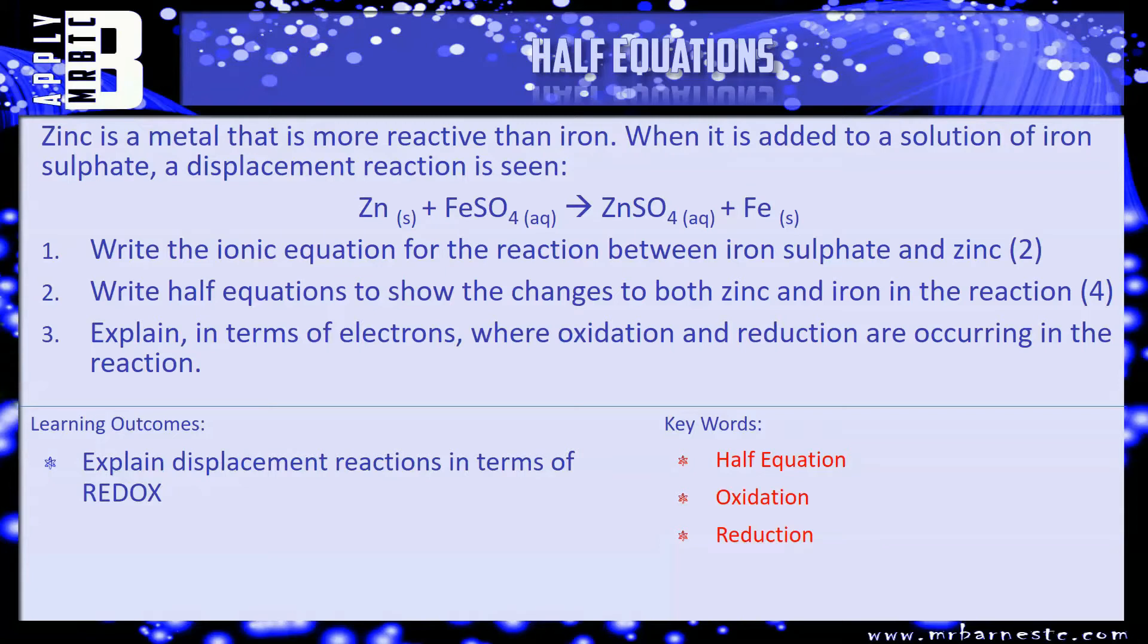So talk about the electrons. Zinc is going from Zn to Zn2+. How's it going to do that? Same with iron going from Fe2+ to Fe. Do the same for both. And then finally question three: Explain in terms of electrons where oxidation and reduction are occurring in the reaction. So I would recommend using the half equations to help you there. Pause the video, have a go, and we'll see how you've done in a minute.